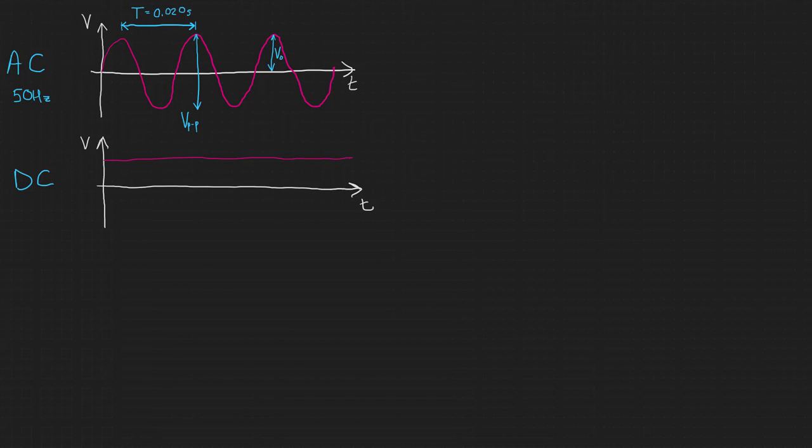Because alternating current is changing all the time, what value should we use in our calculations? Let's consider what happens when we connect an alternating current supply to a resistor. The power dissipated in the resistor is the product of the voltage across it and the current through it, P equals VI.